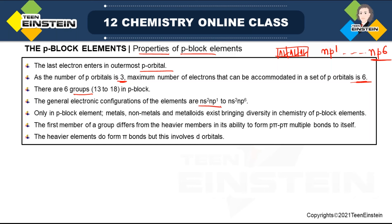The general electronic configuration of p-block elements is ns²npˣ. The ns² part is fixed for all groups, but the p orbital electrons change — from ns²np¹ for group 13 up to ns²np⁶ for group 18.